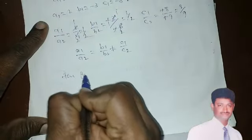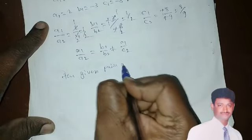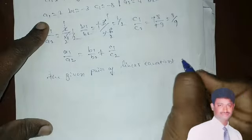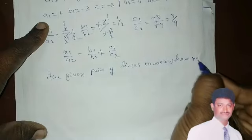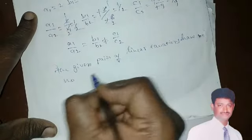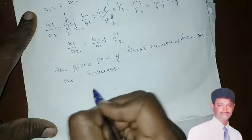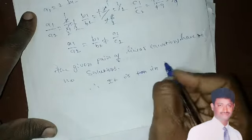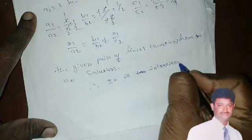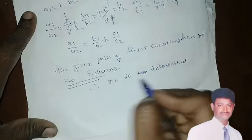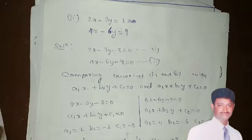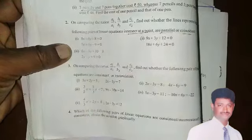Therefore, the given pair of linear equations has no solution and is inconsistent. I think students, we have understood these two problems. In the next class, we are going to solve the remaining problems. Thank you.